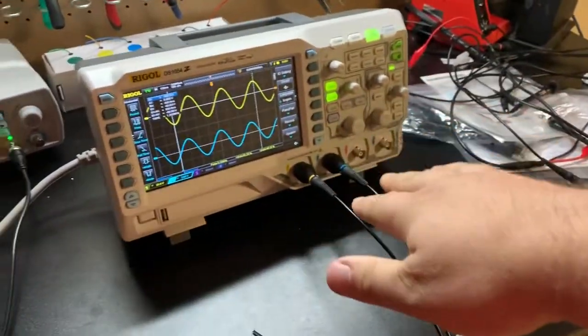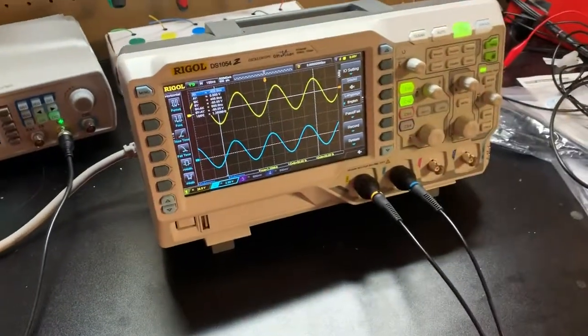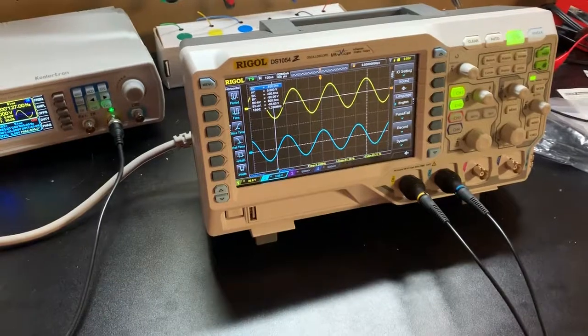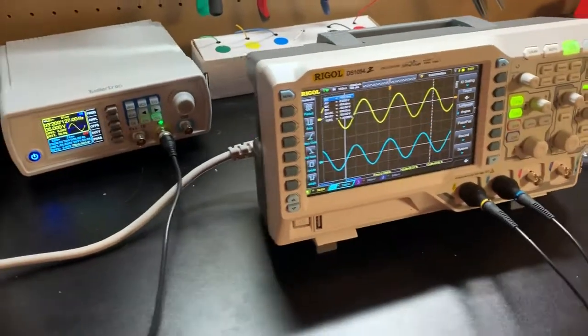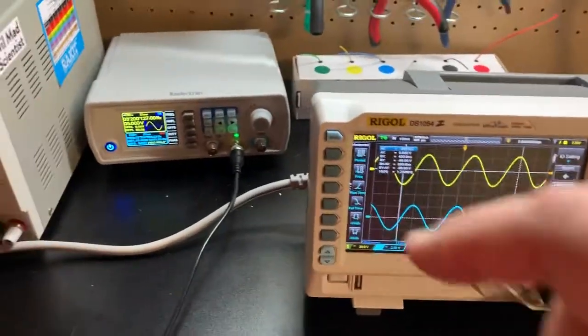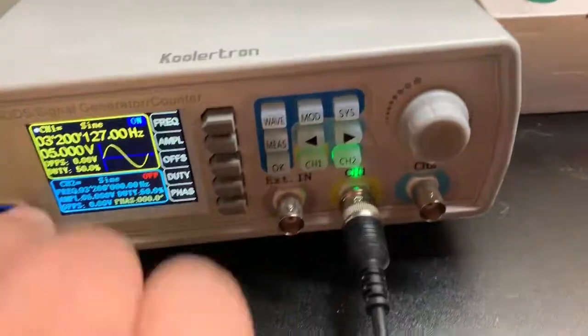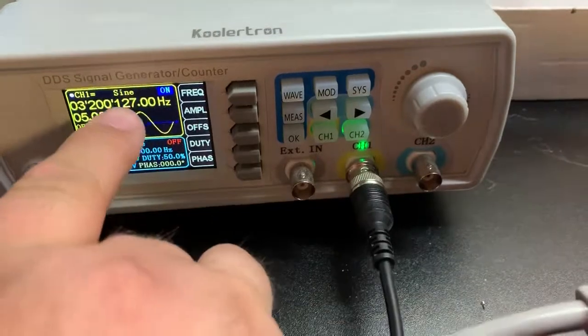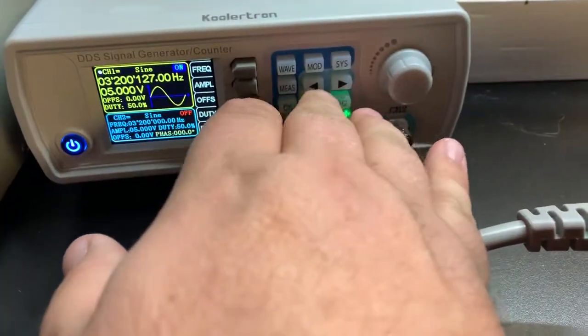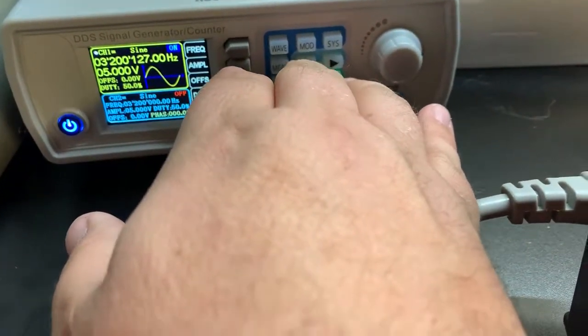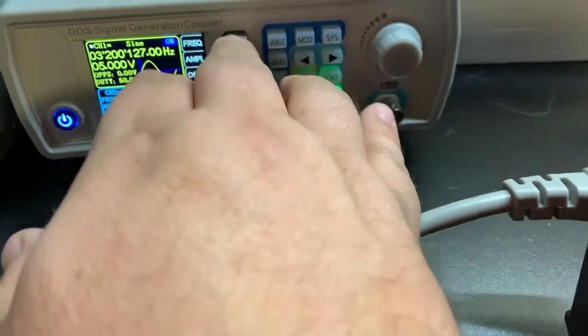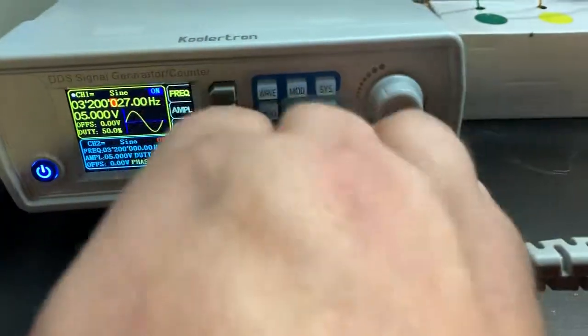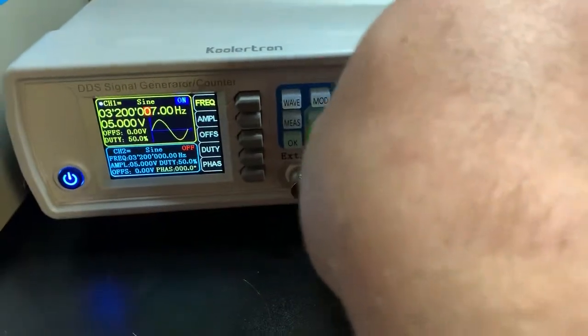So I have two probes set up. I only need one, really. But the second probe is just to confirm what's coming through without the testing. So right now I have my signal generator set up to 3.2 megahertz. It's actually, I have a little bit more accuracy there. Let me adjust the frequency.